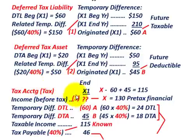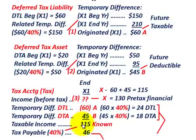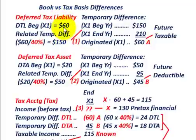In this tax accounting example, we want to determine what our pre-tax income is, which equals our pre-tax financial income. We can determine that based on changes in temporary differences for the period — we'll have two: one for a deferred tax liability and one for a deferred tax asset. We'll also know our taxable income, which lets us determine our tax payable. This is the basic procedure when dealing with deferred tax liabilities and assets.